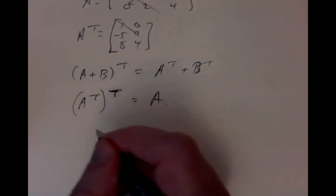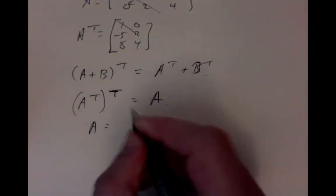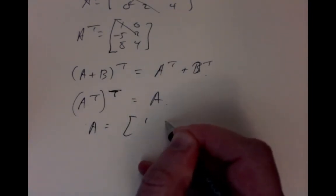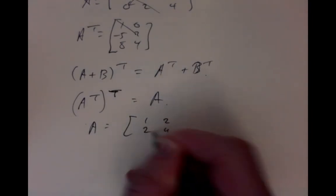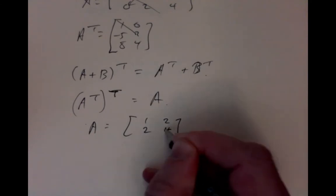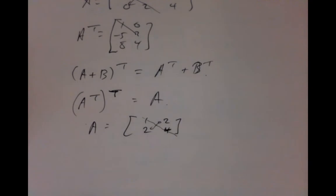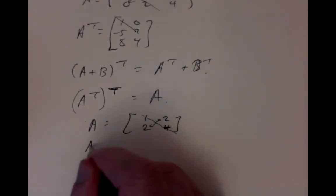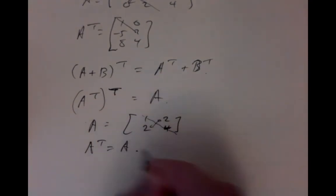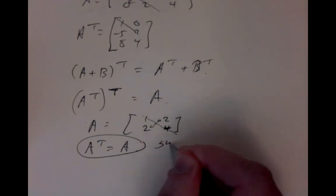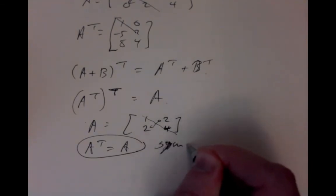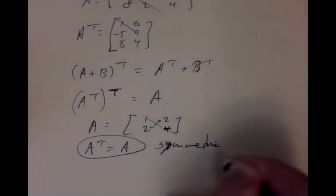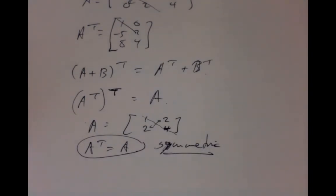And some matrices have the special property that they don't change when you transpose. This matrix, for example, looks exactly the same. If you look down its diagonal, the entries above and below are exactly matching. So A, in this case, is A transpose. And that's what's called a symmetric matrix. Luckily some of the terminology is absolutely standard, like the word symmetric matrix.